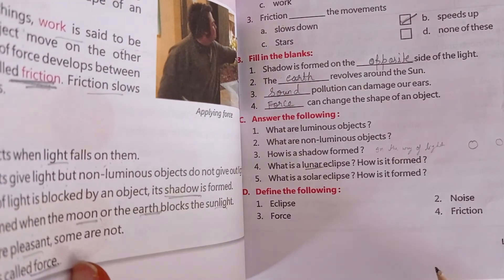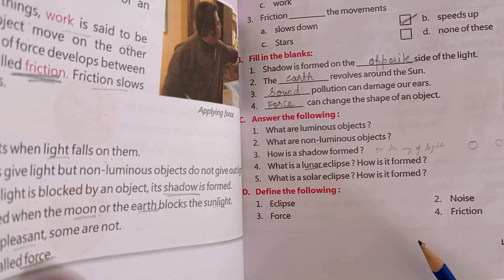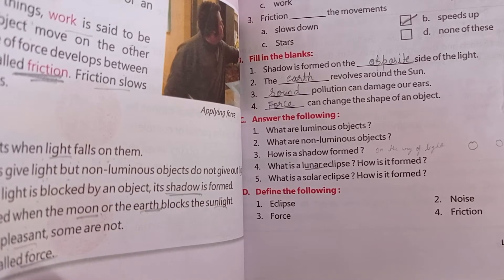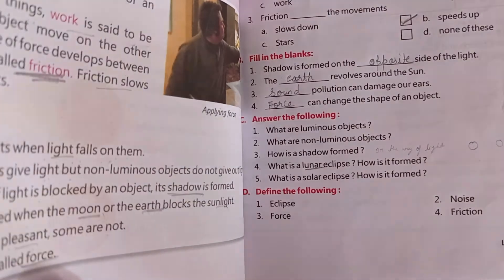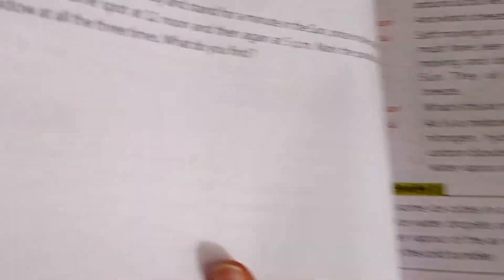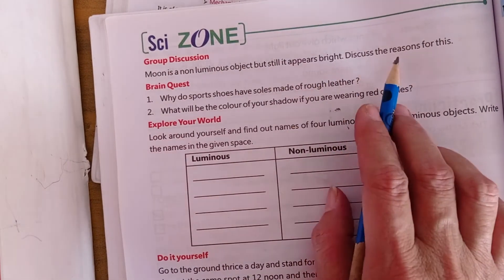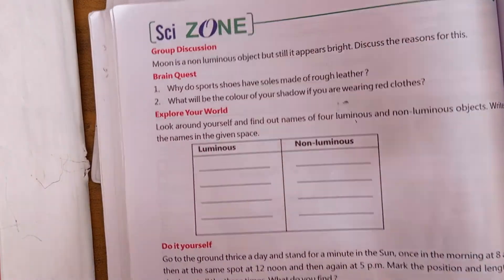What is friction? Friction is a force that develops when an object moves on another object. It's a special type of force called friction. Next, the moon is a non-luminous object but still it appears bright. Discuss the reasons for this.